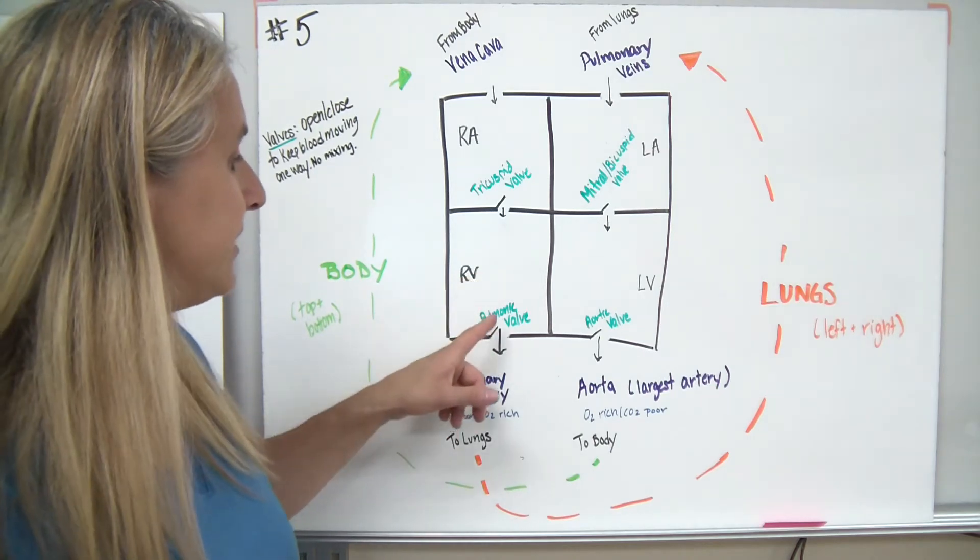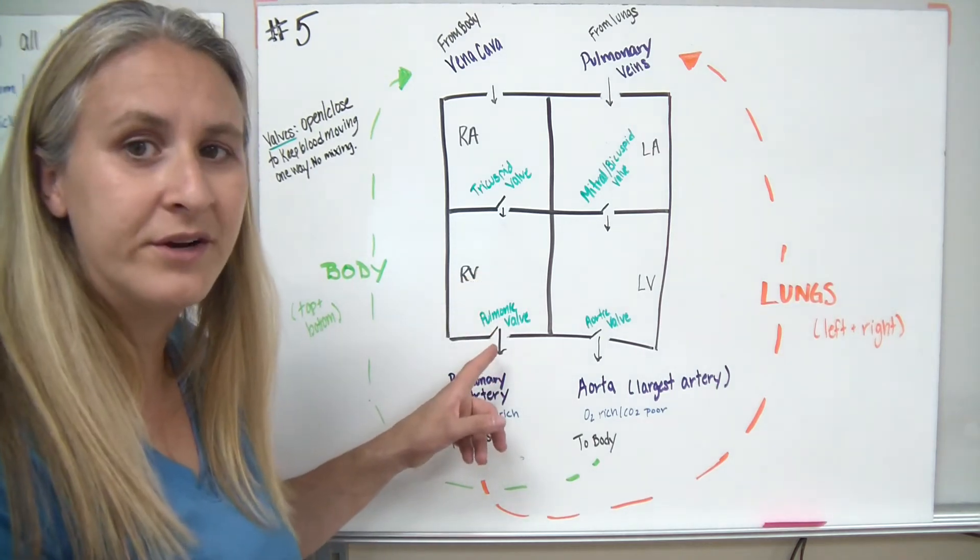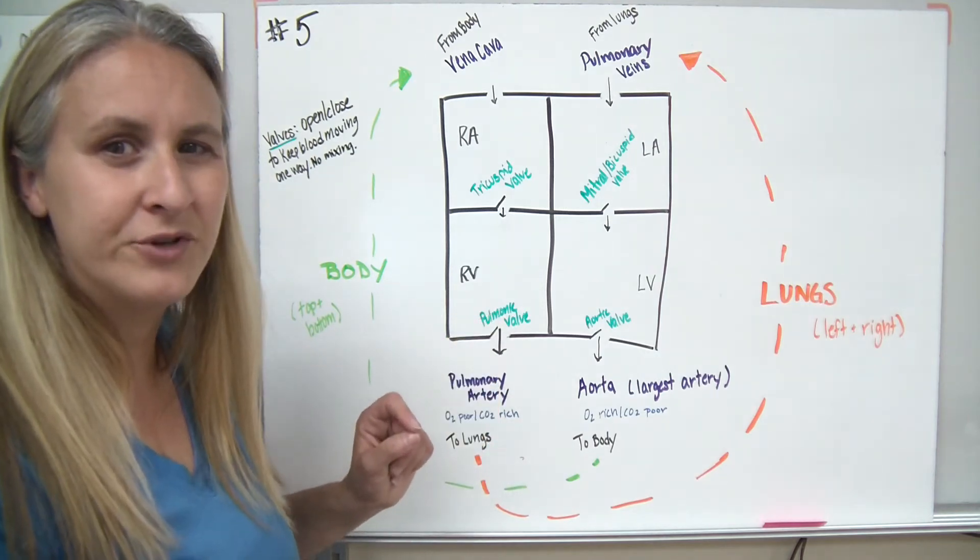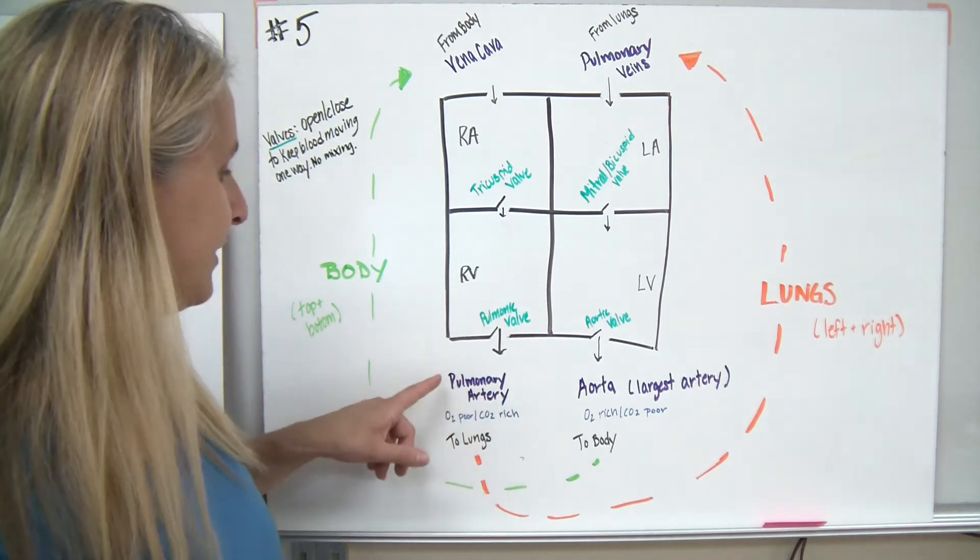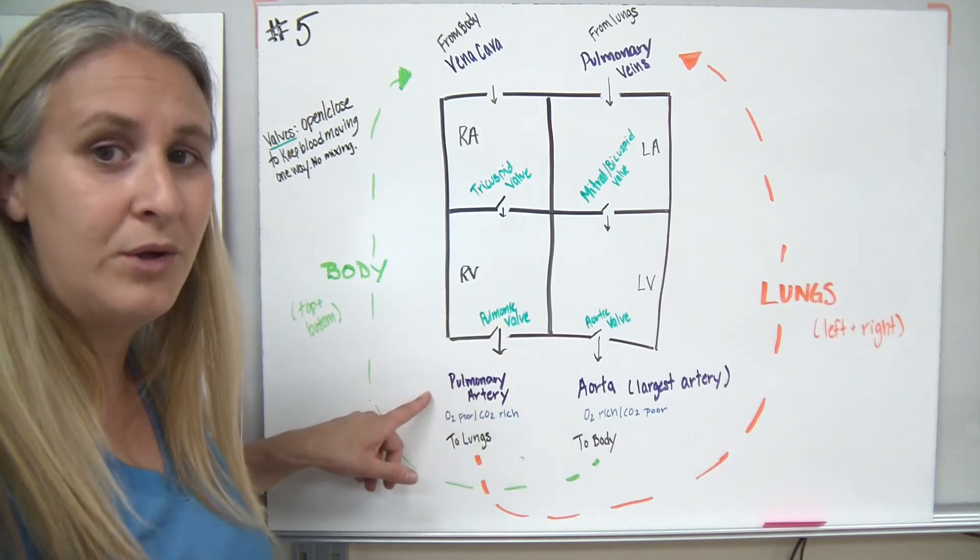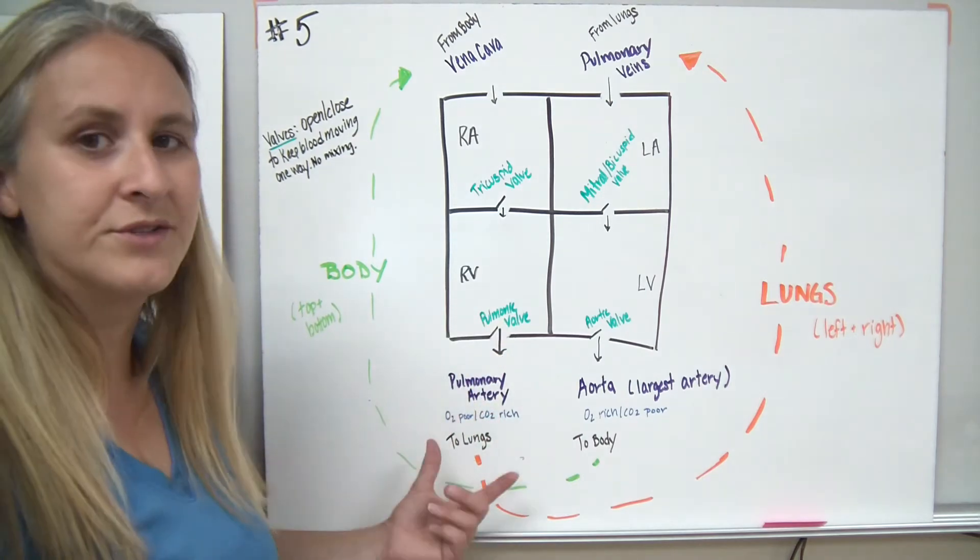When the right ventricle pumps the blood, it's going to go through something called a pulmonary valve or a pulmonic valve. And remember, pulmonary refers to the lungs. So the pulmonic valve is going to allow the blood to travel into the pulmonary artery and go to the lungs.